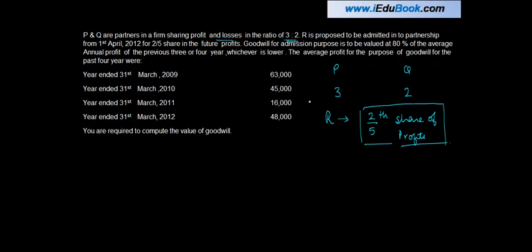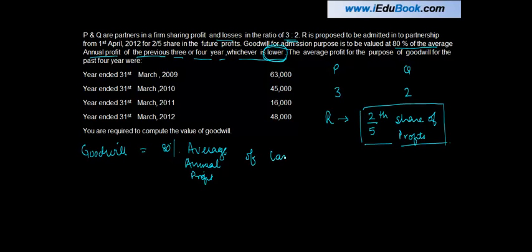Goodwill for admission purposes is to be valued at 80% of the average annual profit of the previous three or four years, whichever is lower. So my goodwill has to be calculated as 80% of the average annual profit of last three stroke four years, whichever is lower.